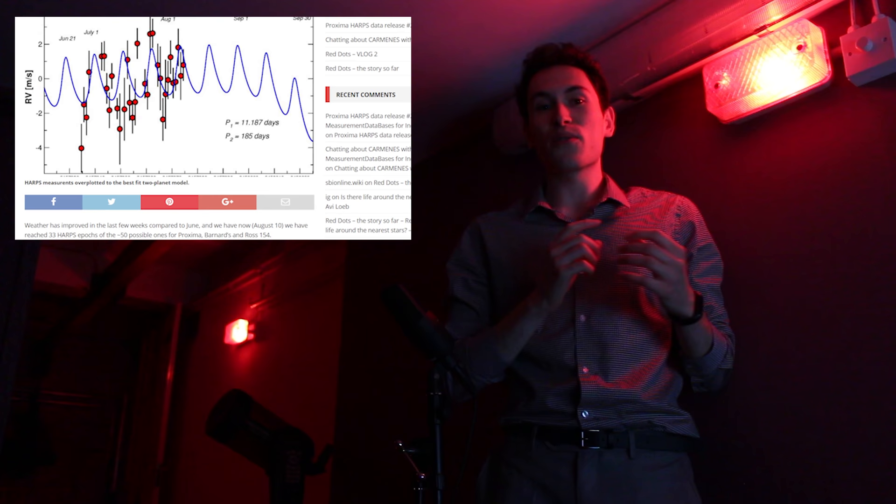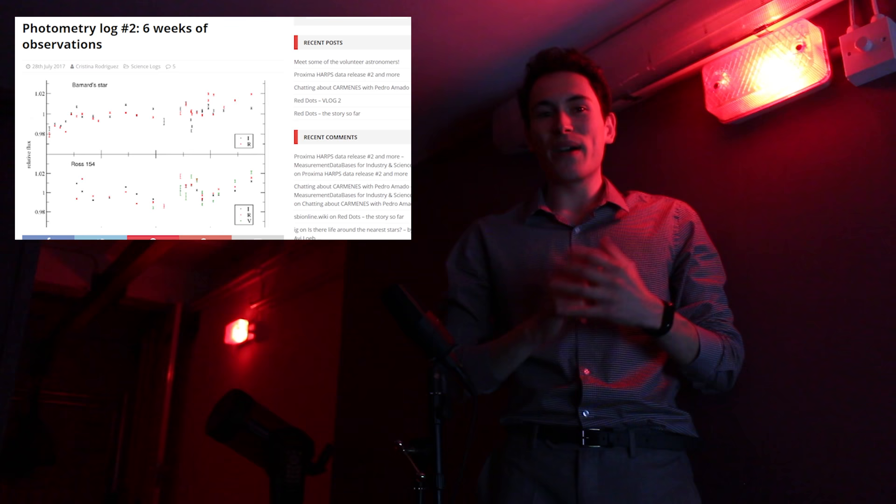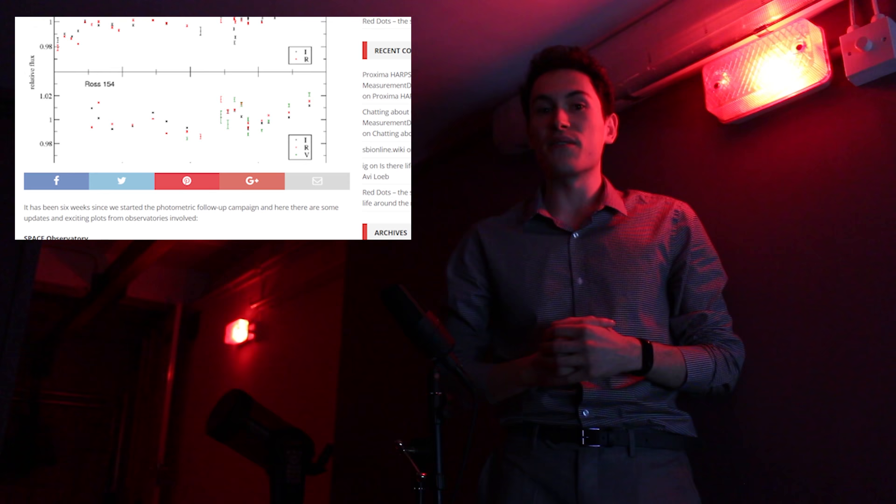The second data release is now up on the Red Dots website, along with a post from Guillem discussing what could be lurking in the signals that have been recorded so far. As always, the photometric campaign is running very well. Check out the second photometric log to see some of the light curves gathered so far and for discussions about the story behind them.